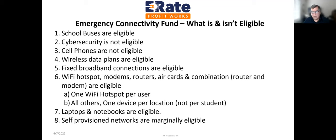What is and isn't eligible: school buses are eligible; cybersecurity is not; cell phones are not eligible, but a wireless data plan on a Wi-Fi hotspot would be. Fixed broadband connections are eligible. Wi-Fi hotspots, modems, routers, air cards, and combinations thereof — like cradle points — would be eligible on a school bus or for home use for multiple students. It's one Wi-Fi hotspot per user; all others are one device per location, not per student. So for a family of five, one cradle point device would cover all five students. Laptops and notebooks are eligible with pricing limitations.